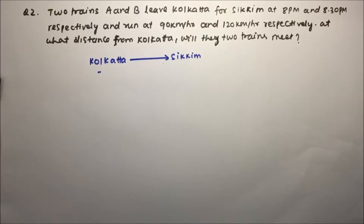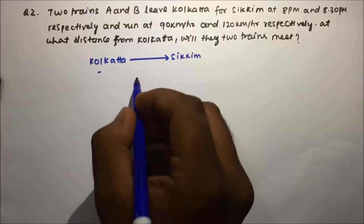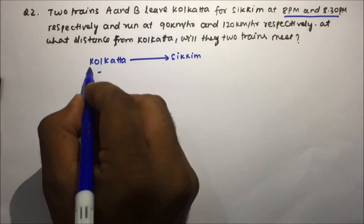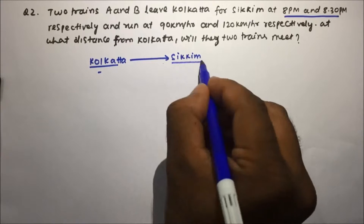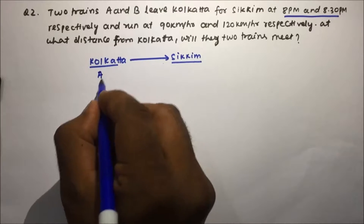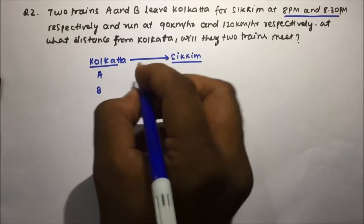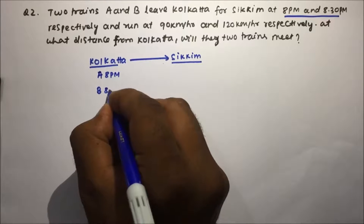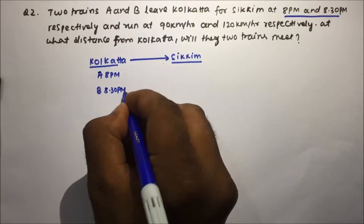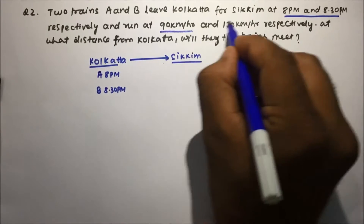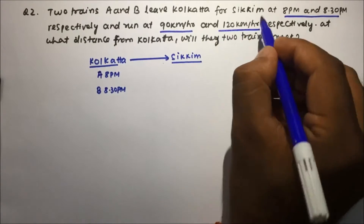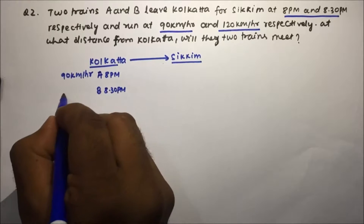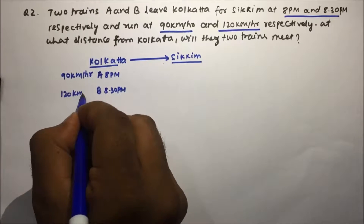Question number 2: Two trains A and B leave Kolkata for Sikkim at 8 pm and 8:30 pm respectively. Train A is leaving at 8 pm and train B is leaving at 8:30 pm. Their speeds are 90 km/h and 120 km/h respectively.